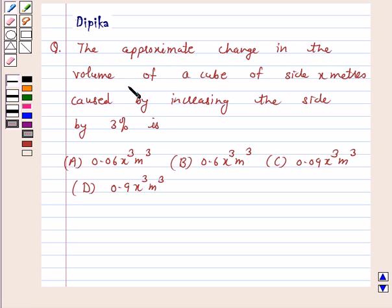The approximate change in the volume of a cube of side x meters caused by increasing the side by 3% is: (A) 0.06x³ m³, (B) 0.6x³ m³, (C) 0.09x³ m³, and (D) 0.9x³ m³.